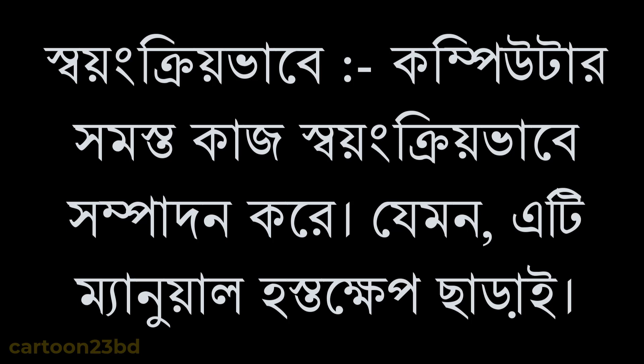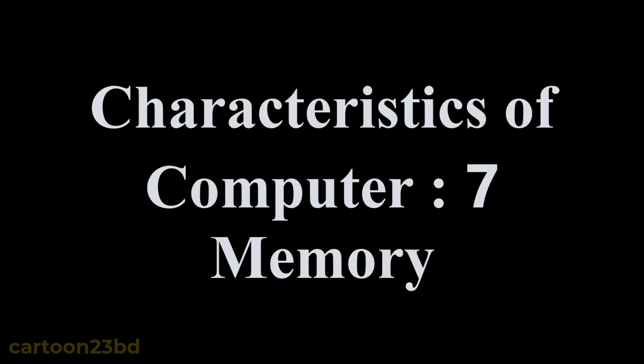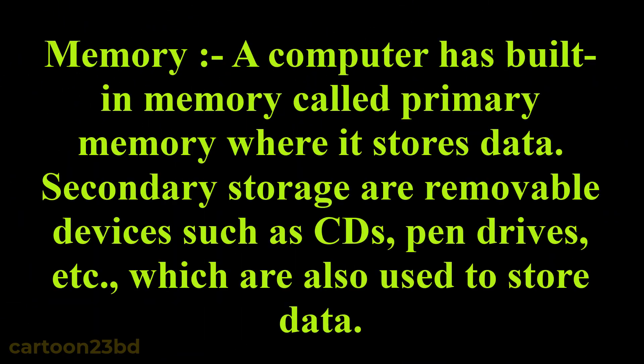Characteristics of Computer 7: Memory. A computer has built-in memory called primary memory where it stores data. Secondary storage devices are removable devices such as CDs, pen drives, etc., which are also used to store data.